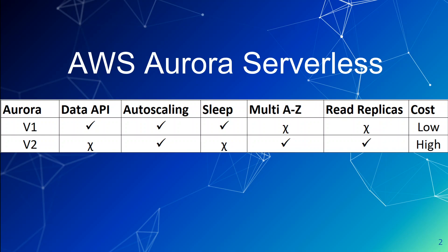AWS has been offering Aurora Serverless for some years now. Earlier, they announced version v1 of AWS Aurora Serverless, and these days it is v2. This is a quick video to understand the differences between v1 and v2.